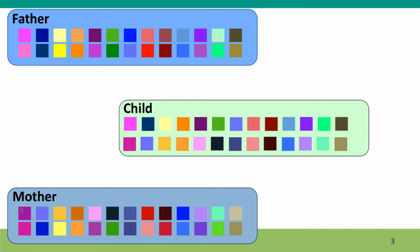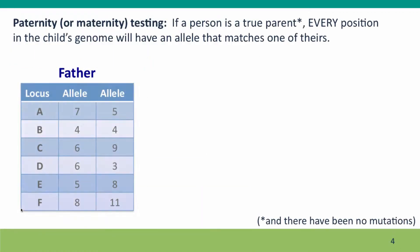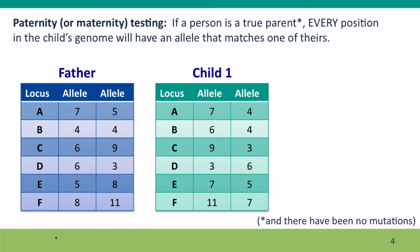When this is applied in a paternity testing situation, here's how it works out. The father's DNA is scored for which allele he has at each of the 13 VNTR loci — I've only shown six here — and the child is also scored. If the father is truly the father of the child, then at every locus, one of the child's alleles must match one of the father's alleles. So here the child has seven and four, the father has seven and five — that allele matches. The child has six and four, the father has two allele fours, etc. For true paternity, every allele must have a match. Five and five, eleven and eleven. So provided this carried through for all 13 alleles, we would say yes, this man is the father of this child.